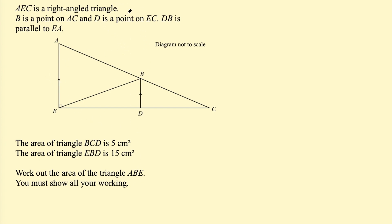The parallel lines are already indicated on the diagram, and the right angle triangle also. The areas we can draw in — so BCD is here, that's 5 cm², EBD is this one, that's 15 cm², and we're looking for this area ABE.